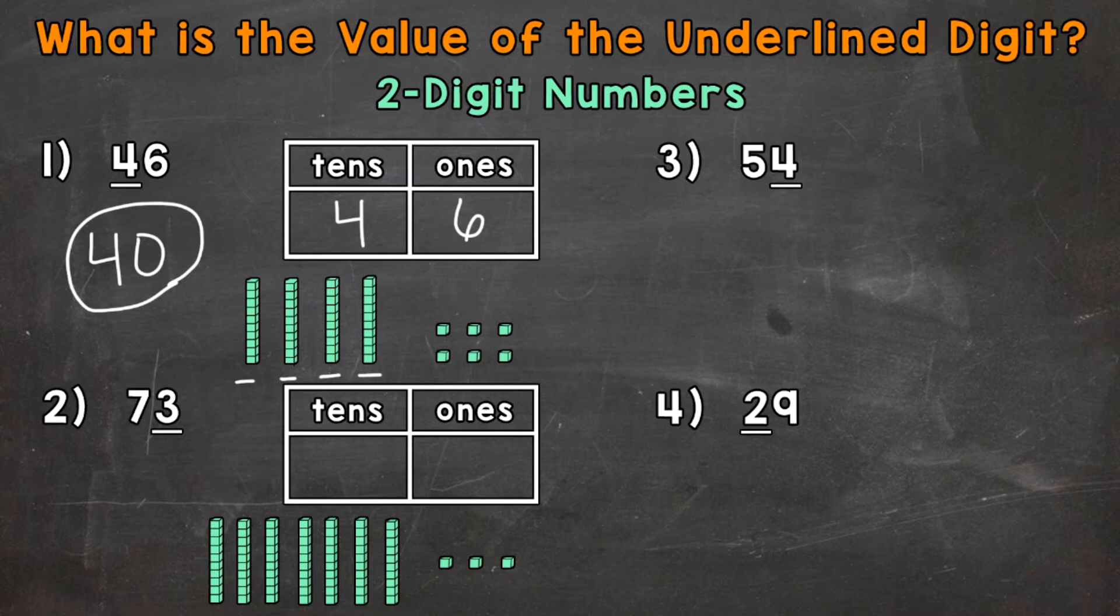Now the 6, on the other hand, is in the ones place. So it represents 6 ones, and that 6 has a value of 6.